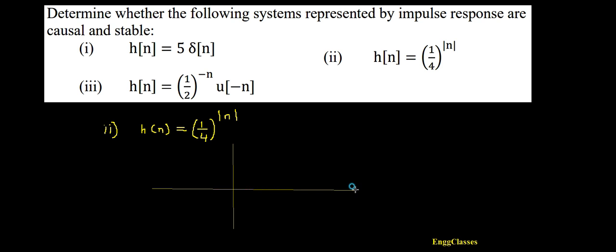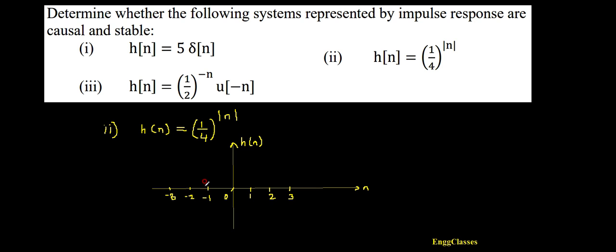The task is to determine if this system is causal and stable. Before we proceed, the very important thing is to sketch this signal first. Once we sketch h(n), it becomes very easy to test for causality and stability. Let me set up the x-axis and y-axis to plot h(n) with respect to n.